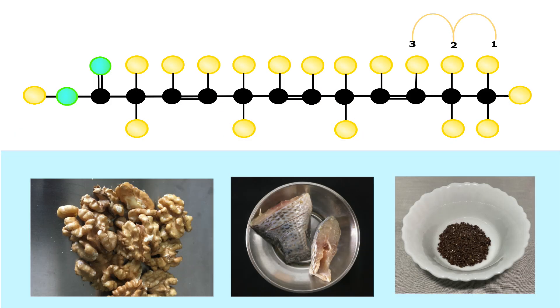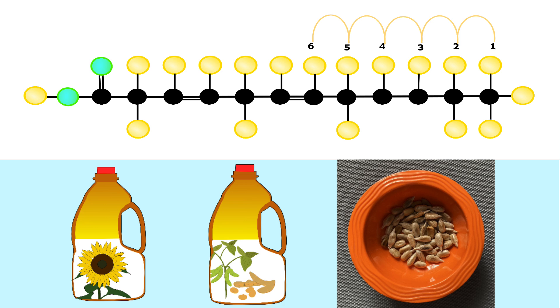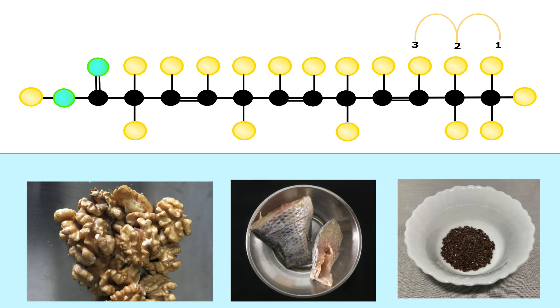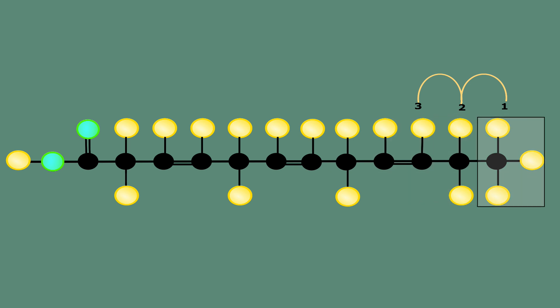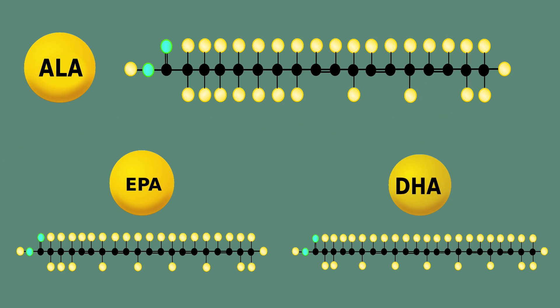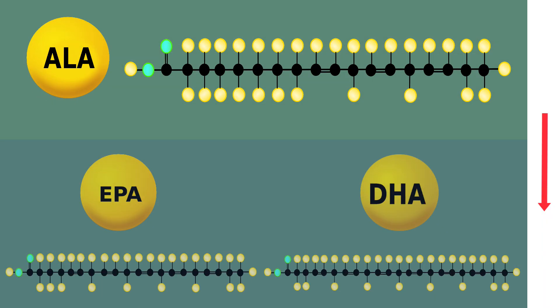Omega-3 and omega-6 are essential PUFAs. Omega-3 fatty acids have a double bond on the third carbon atom from the methyl end. Omega-3 fatty acids include ALA, EPA and DHA. ALA can be converted to EPA and DHA, but the conversion is very limited. Hence, all three should be obtained through diet.